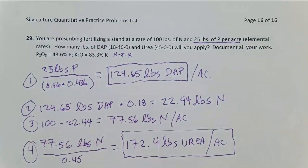Step one, figure out how much DAP to apply. Step two, figure out how much nitrogen was applied with that DAP. Step three, reduce that from the amount of nitrogen remaining to be applied. Step four, figure out how much urea to apply to meet that remaining nitrogen demand. So that's how you do a more complex fertilizer prescription involving multiple fertilizers intended to meet multiple nutrient demands.